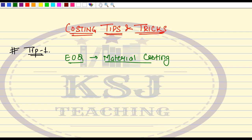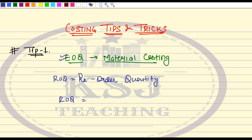So let's say there is a question where you have to use ROQ — reorder quantity — but reorder quantity is not given to you. What is given is information from where you can calculate EOQ. Always remember: do not get confused in the examination. ROQ is equal to EOQ — reorder quantity is equal to economic order quantity. So if you have the information to calculate EOQ, calculate it and use that as ROQ in the formulas.